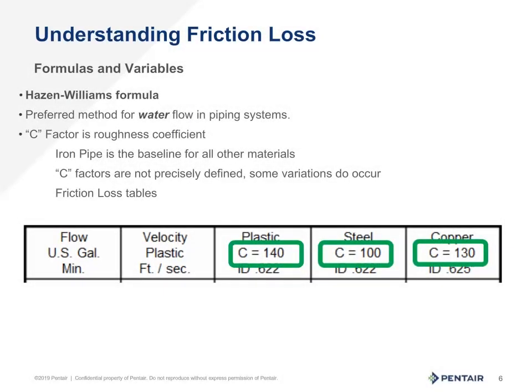One key factor is the C value of the material the water is flowing through — this is the smoothness factor. Steel, being the standard in the last century, is the standard on which other pipes were compared, and thus steel is graded 100. The smoother the material compared to steel, the higher the number will be. The rougher the material compared to steel, the lower the number will be.